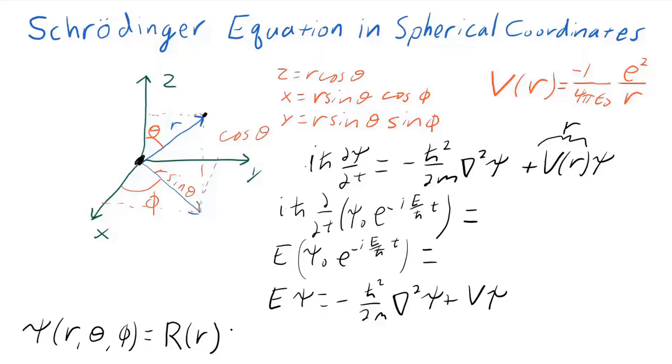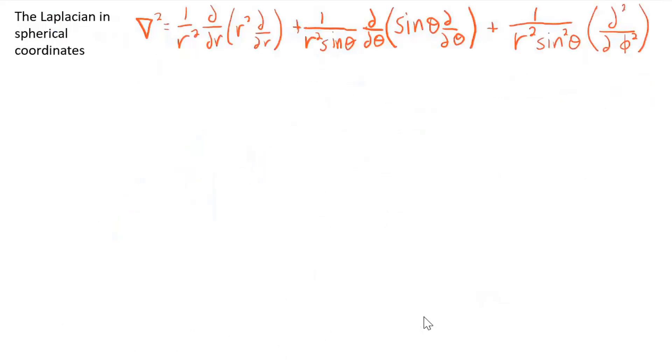Capital letters are the functions, the lowercase letters are the variables. Put this into the Schrödinger equation. Using the Laplacian in three dimensions, we can have a messy but solvable solution. Let me write this out using that Laplacian operator in three dimensions.